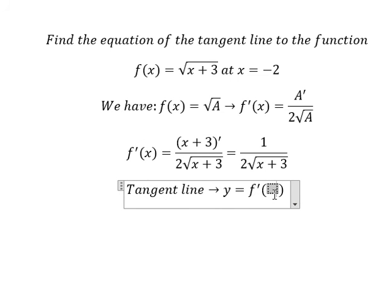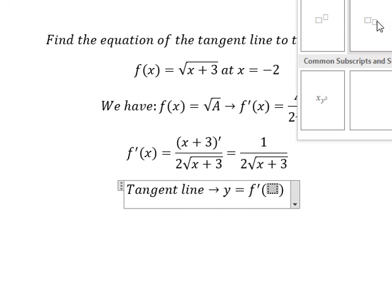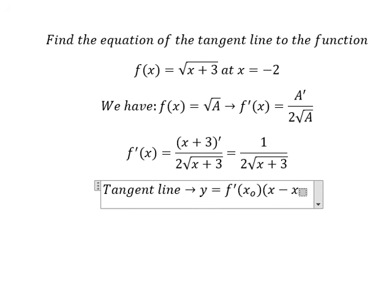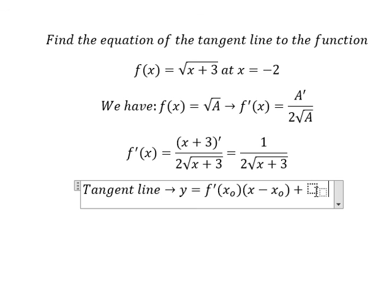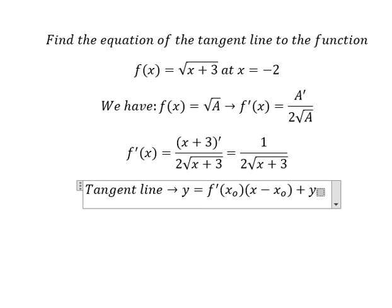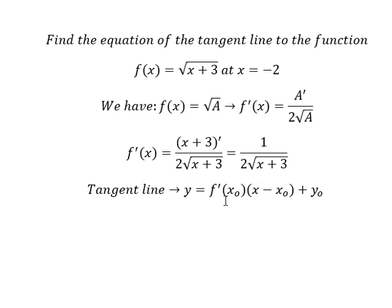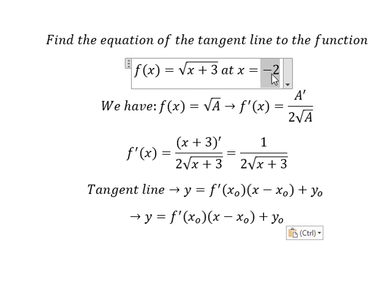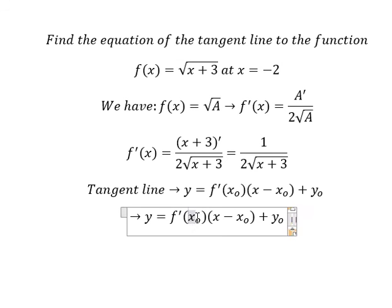For the tangent line formula, we need to substitute s-zero in here. The formula involves s minus s-zero, plus y-zero. We know that s equals negative two, so I will substitute that value into the formula.